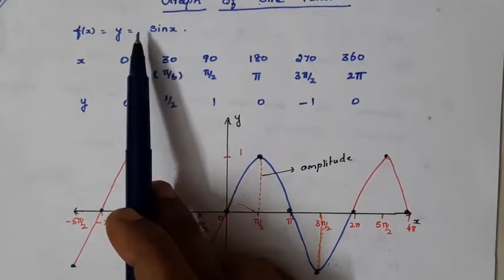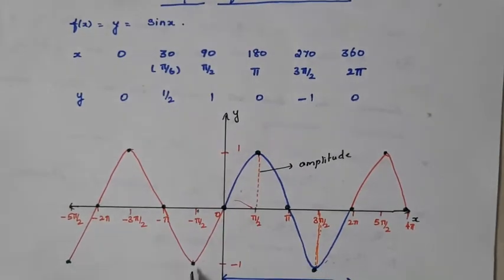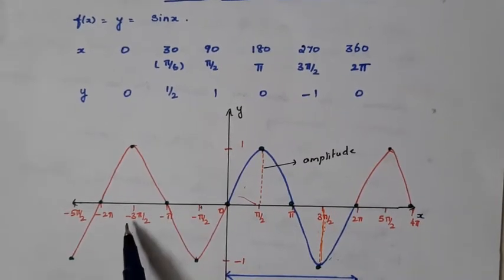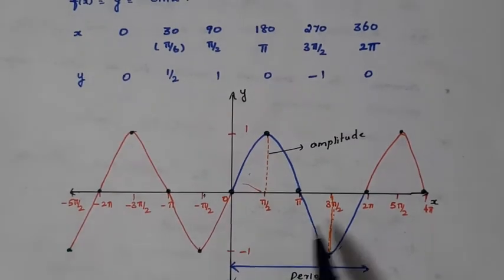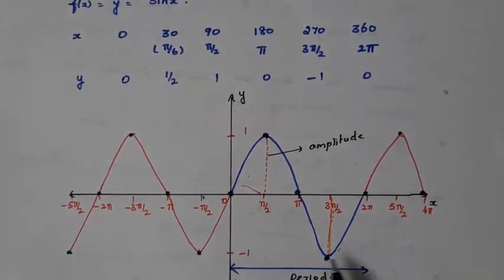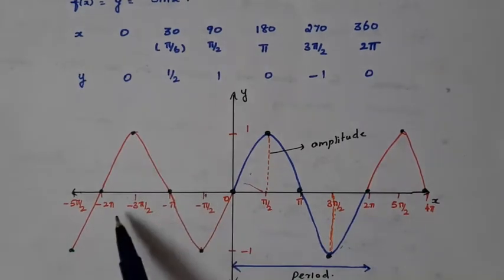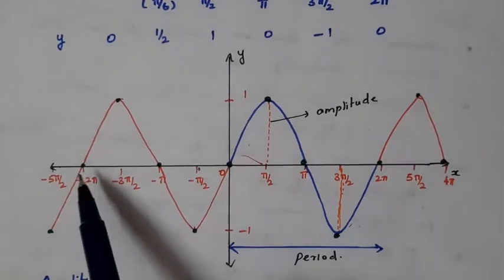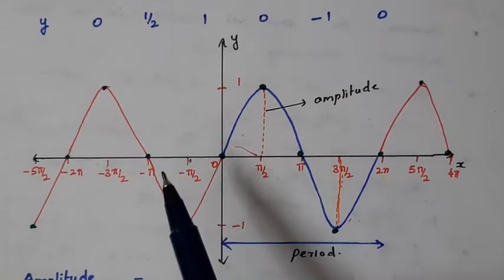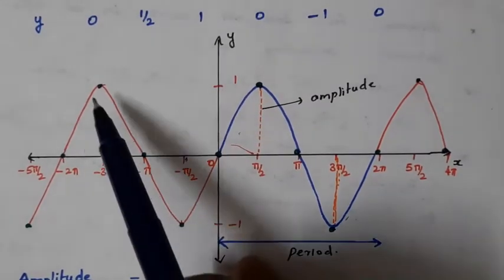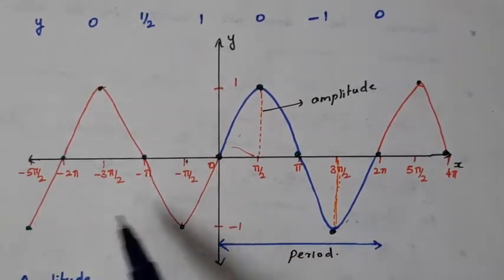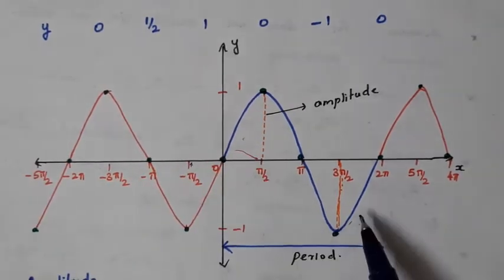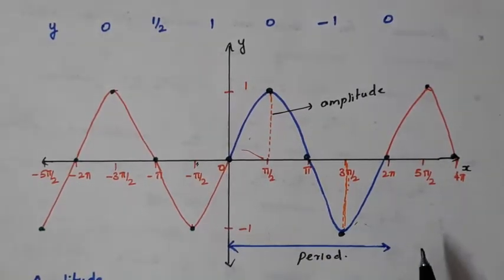Sine of −π/2 equals −sine π/2, which is −1. Sine of −π = 0. Sine of −3π/2 = −sine 3π/2. Since sine 3π/2 = −1, minus of −1 is +1, so sine of −3π/2 = +1. And sine of −2π = 0, because sine of nπ equals 0 for all n. If you extend the graph in the negative side, you get a sine graph which has continuous crests and troughs.